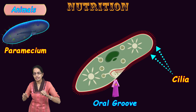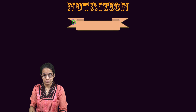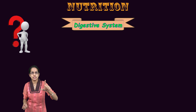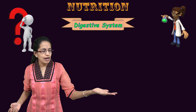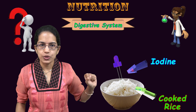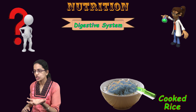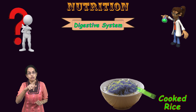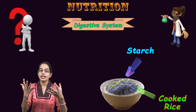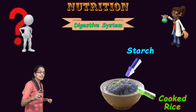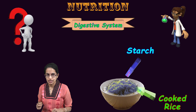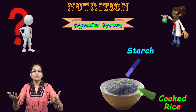Coming to nutrition in higher-order organisms, let's first understand a simple experiment. I have some cooked rice and I add a few drops of iodine to it — the color changes to blue-black, indicating the presence of starch. When we digest food, there is digestion of starch, carbohydrates, fats, and proteins that occurs in the human body.